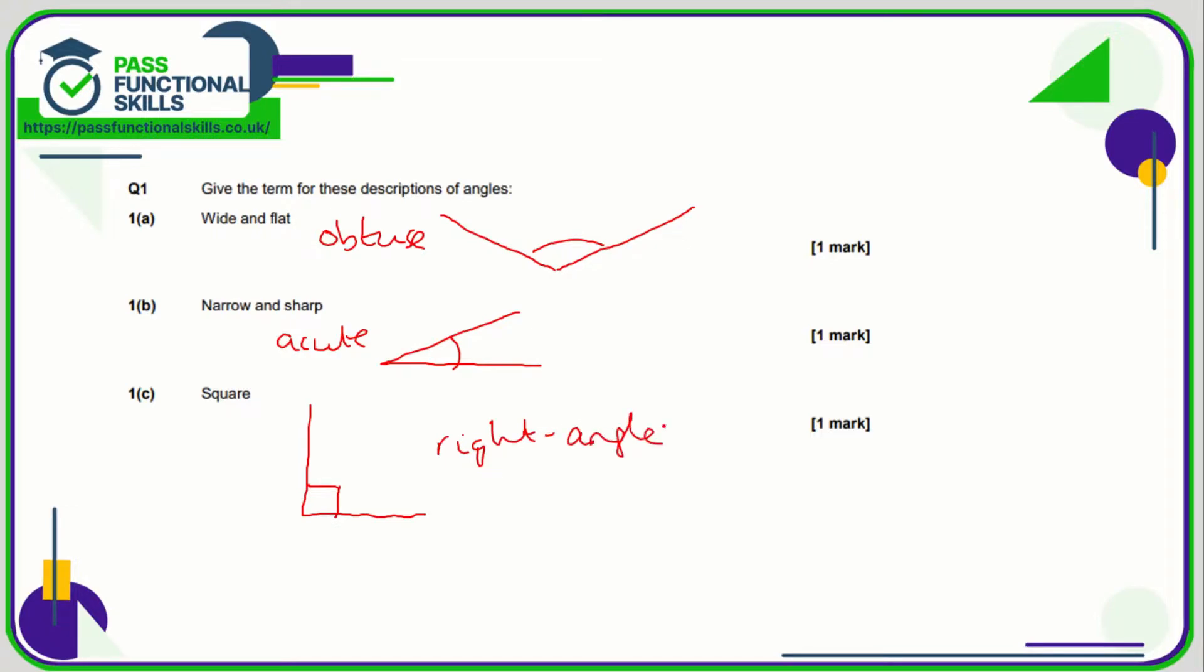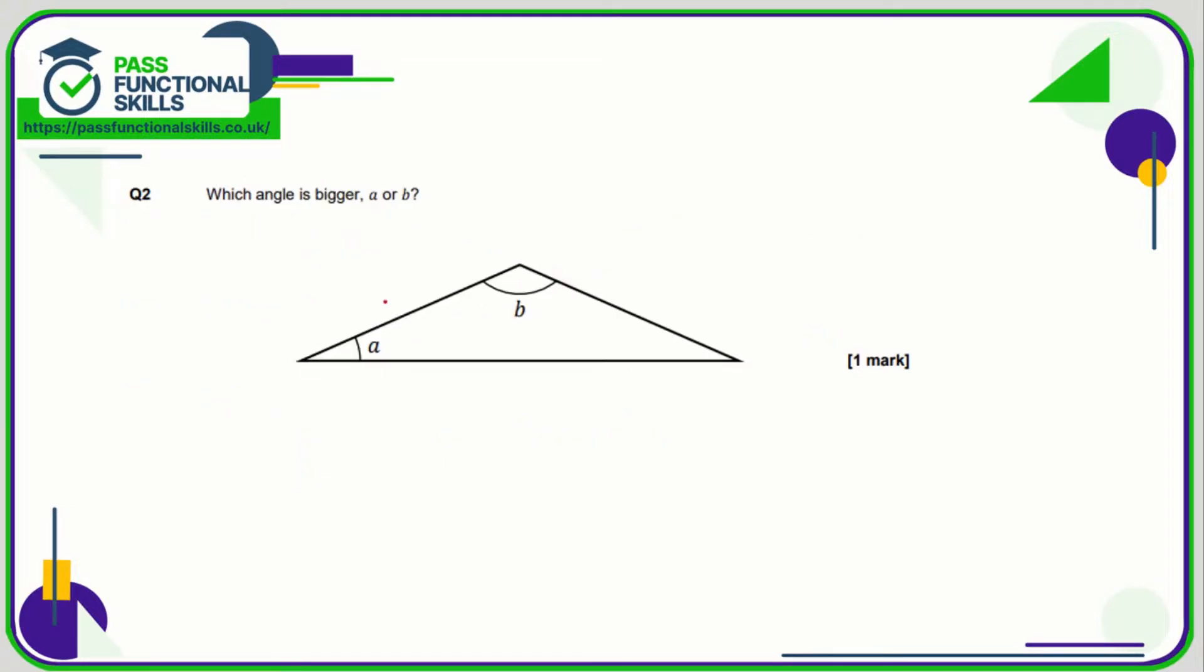Which angle is bigger, a or b? Well, it's fairly obvious that b is bigger. B is obtuse whereas a is acute, meaning it's less than 90 and this one is greater than 90, so b must therefore be bigger than a. A is 90 degrees, b is an acute angle so it's less than 90 degrees, so a is bigger.